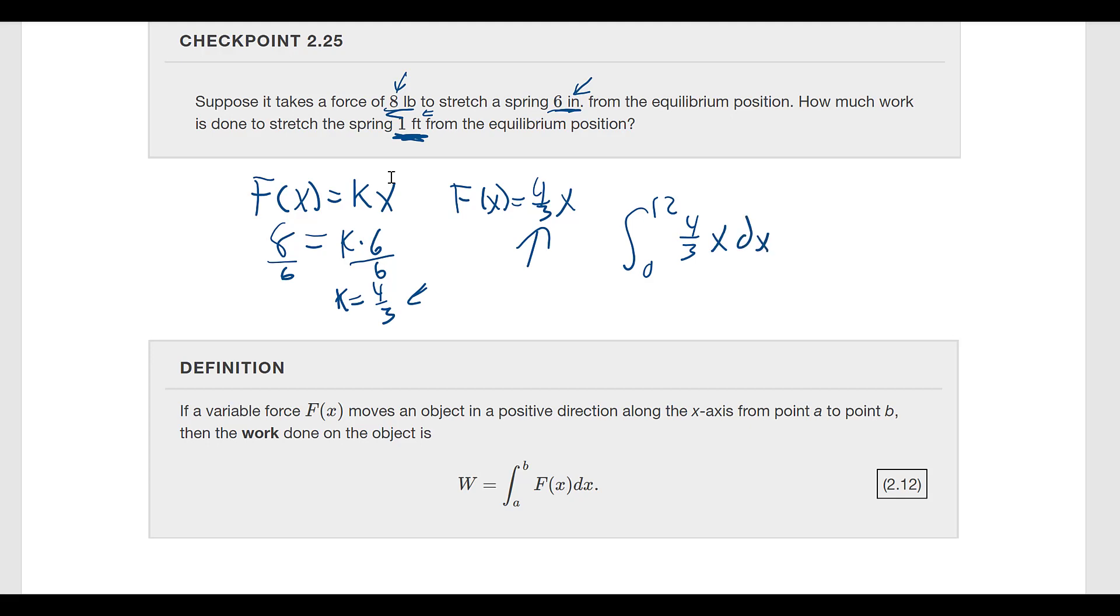That's (4/3) times x squared over 2, and we're going to evaluate that from 0 to 12. We can reduce this 2 and the 4, and we end up with (2/3) times 12 squared minus 0 squared. So (2/3) times 144, and that's going to be 96.